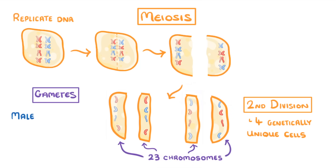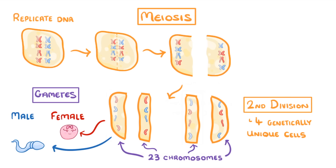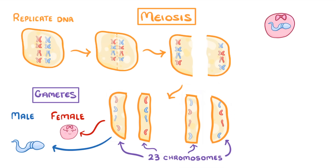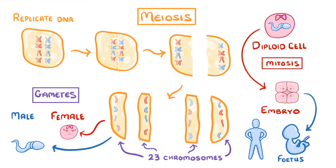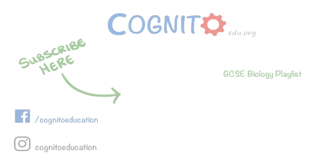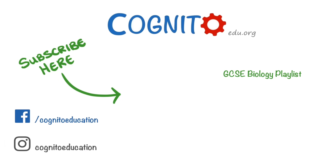In male animals, these would probably go on to develop into sperm cells, while in females they'd develop into egg cells. Then if a sperm and egg fused during fertilization, they'd form a diploid cell that could divide by mitosis over and over again until it forms an embryo, then a fetus, and then finally a fully grown organism. Hopefully you found that useful — we'll put the link to our mitosis video in the description if you're interested, and we'll see you next time.